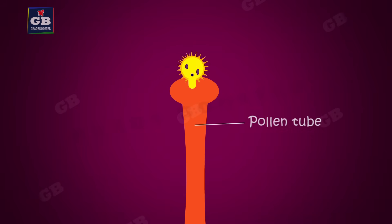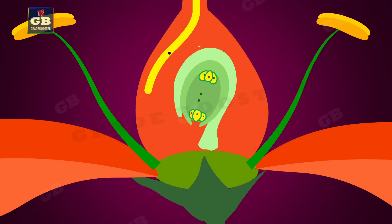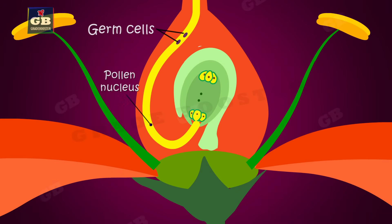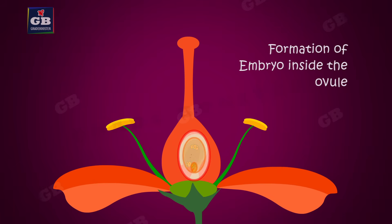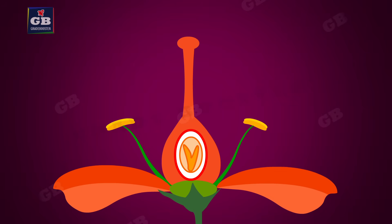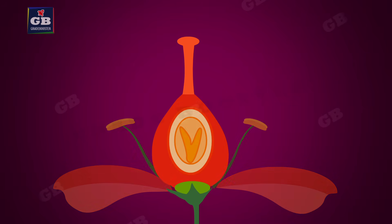The pollen grains produced by the anther are transferred to the stigma of the pistil. The pollen grain germinates and produces a long tube called the pollen tube, which grows into the style to reach the ovule. The pollen nucleus and two germ cells travel through the pollen tube and fertilize the egg.